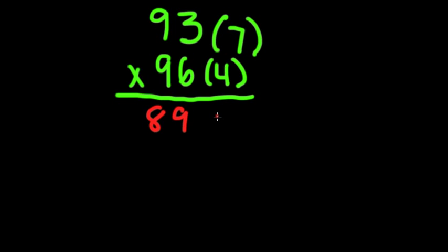Then, you multiply the two numbers in parentheses together. 7 times 4 is 28. So the answer to 93 times 96 is 8,928.